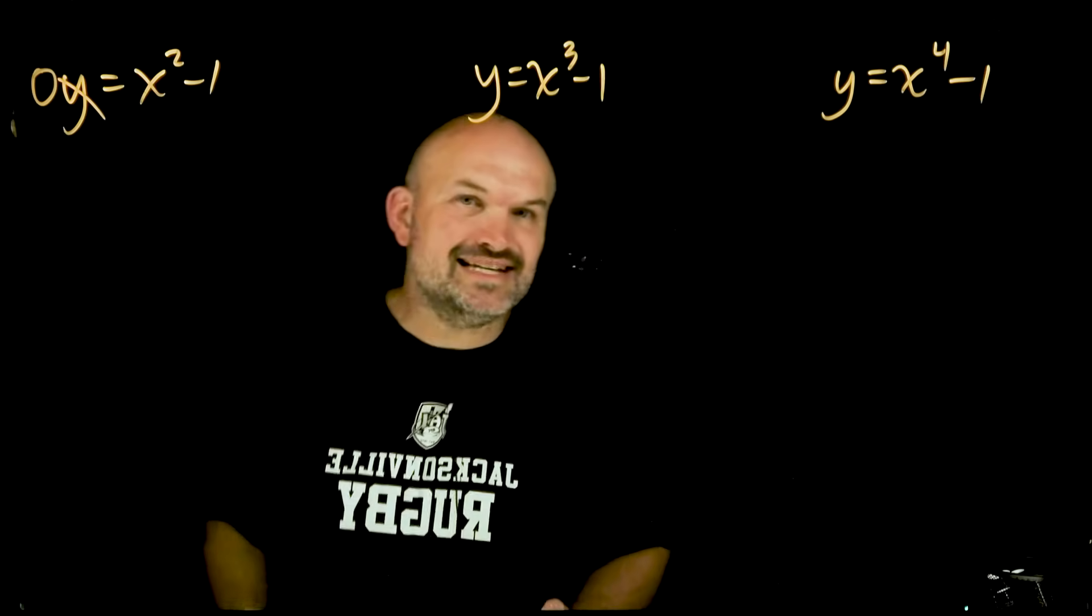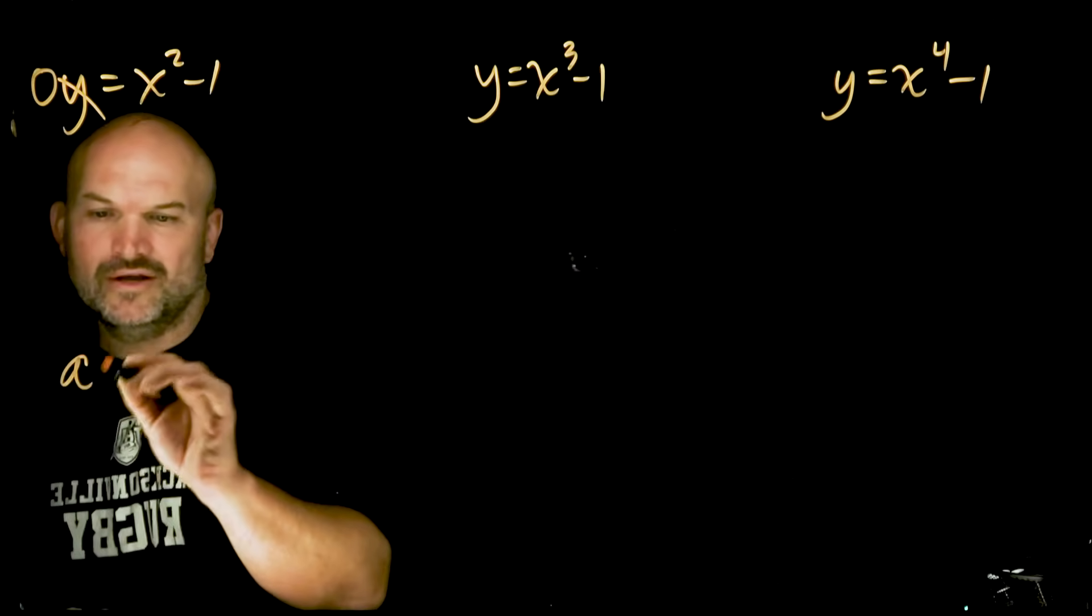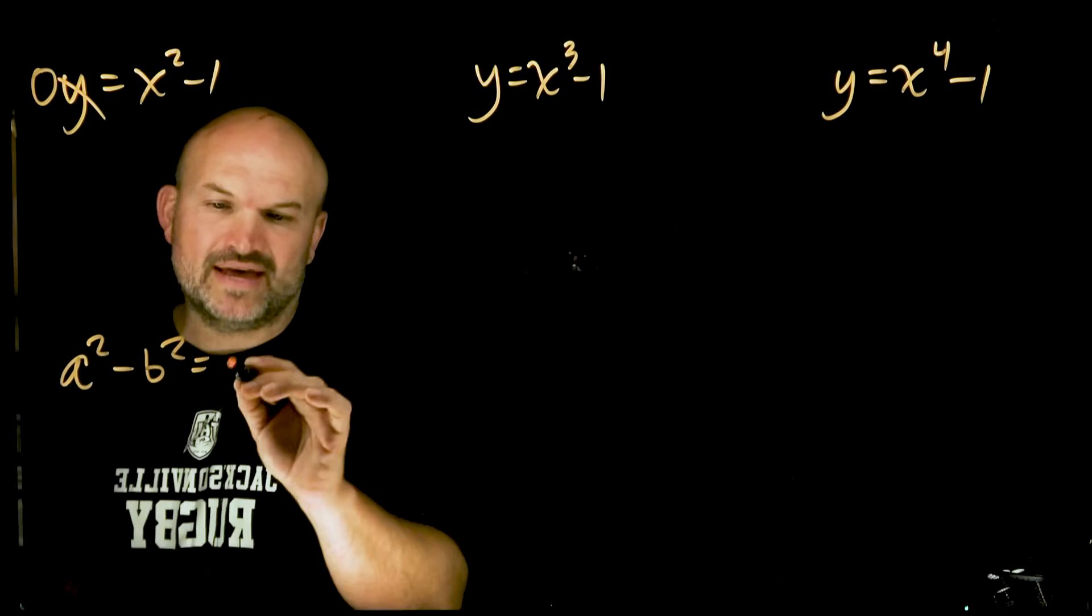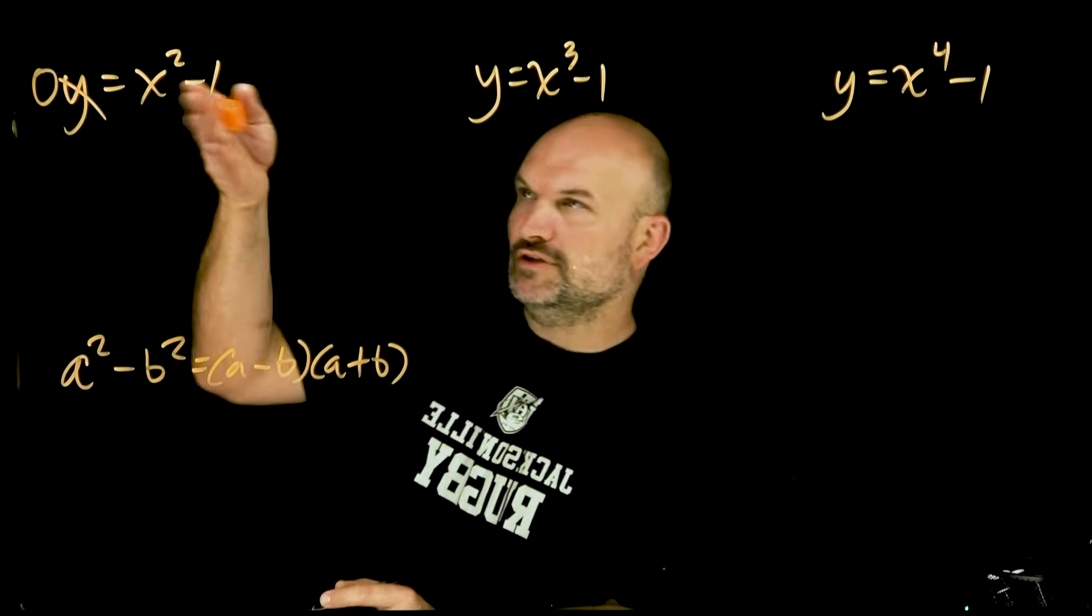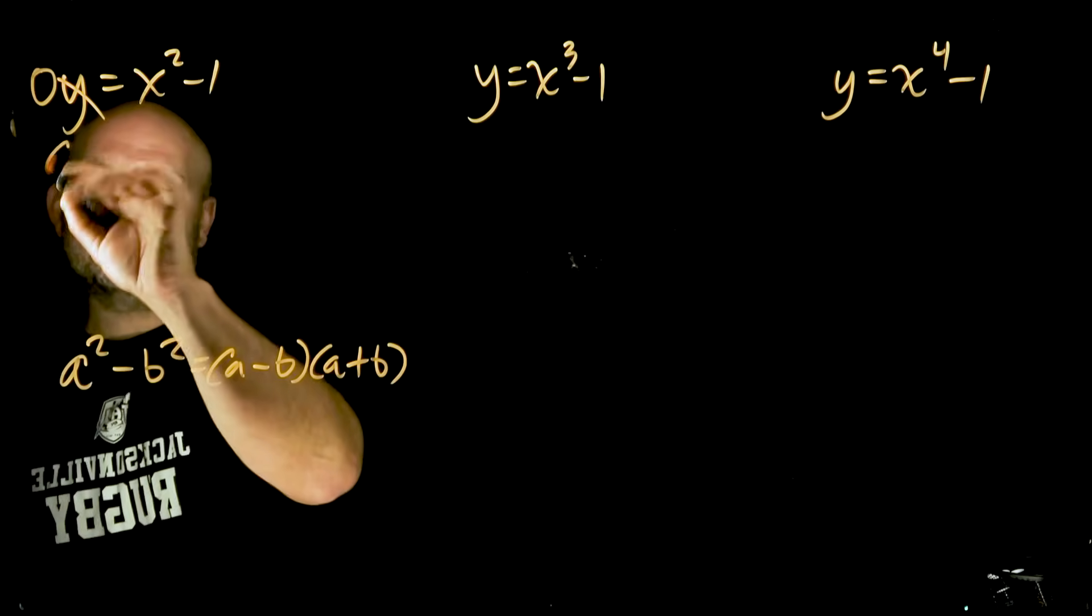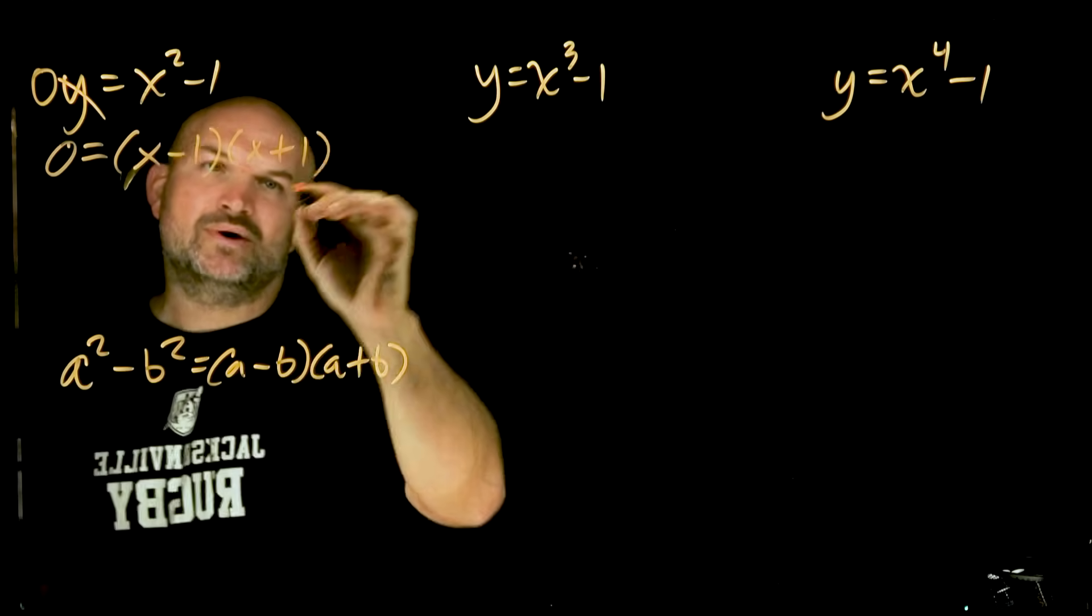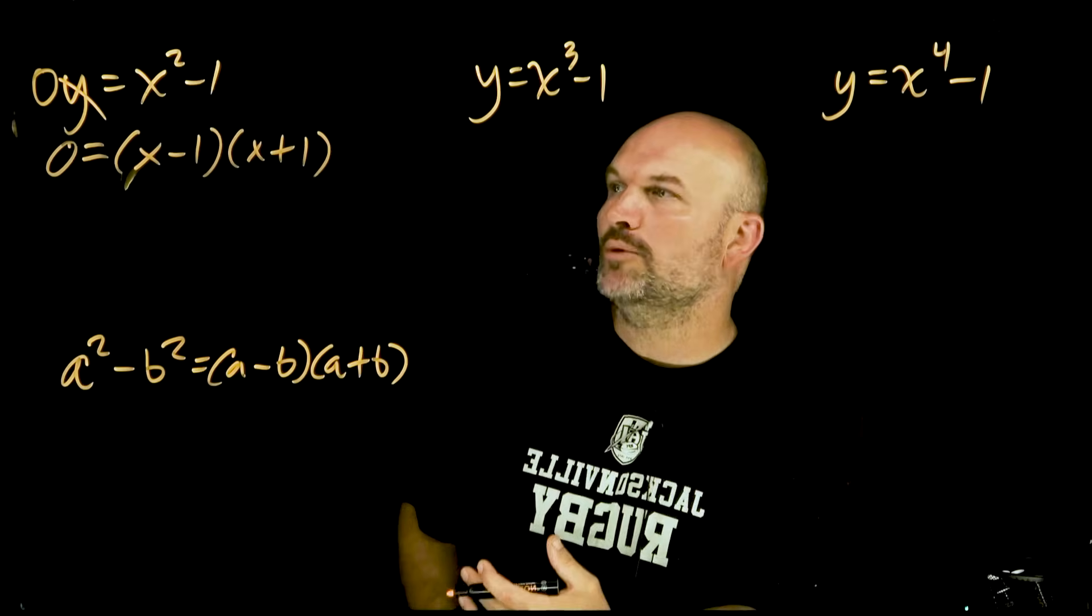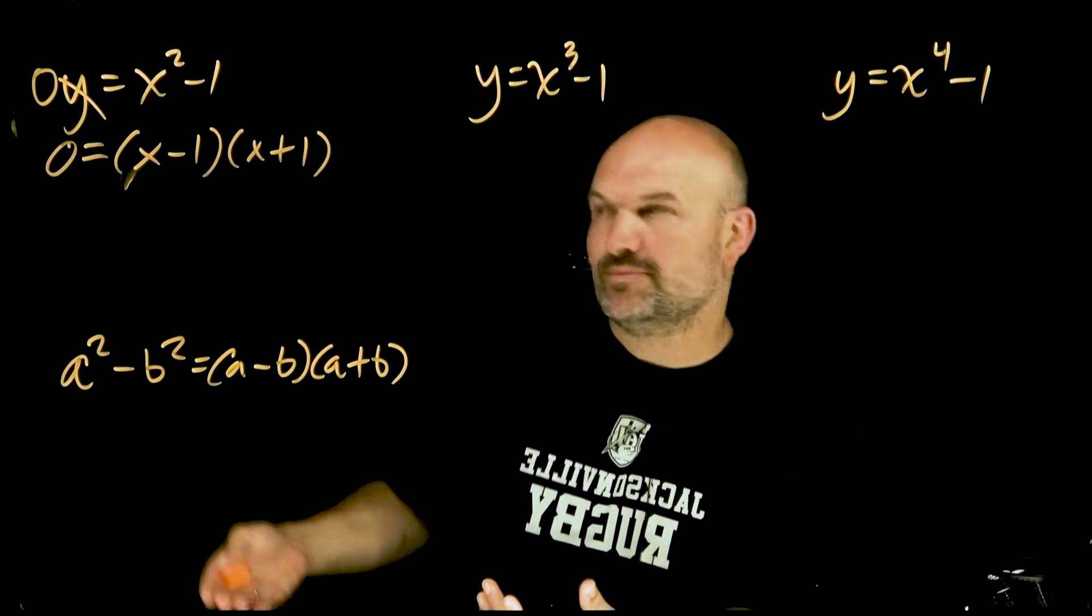Hopefully you recognize that this is in the form of a difference in two squares. If you're watching this video, I hope you're familiar with a squared minus b squared. The factored form of that is going to be a minus b times a plus b. The reason why having something in factored form is so powerful when you have it equal to zero is you can apply the zero product property.